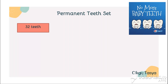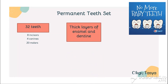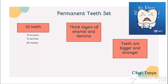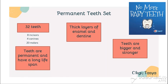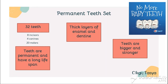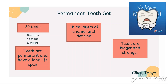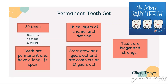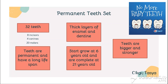The permanent teeth set has 32 teeth. They have a thick layer of enamel and dentine, and they are big and stronger. That's why they're called permanent teeth — they stay with you until you get old and have a long lifespan. Permanent teeth start to grow at six years old and are complete at 21 years old. The teeth your parents have are all called permanent teeth.